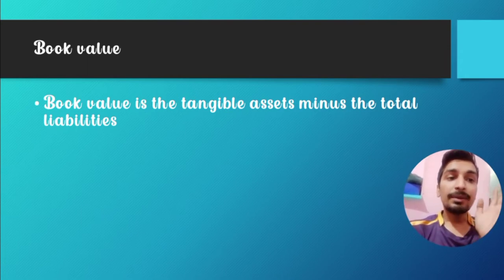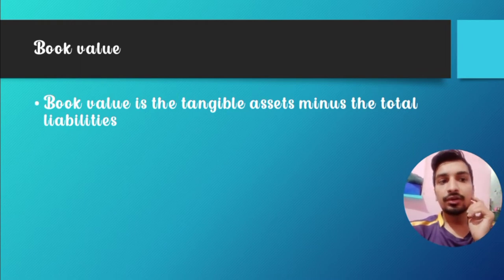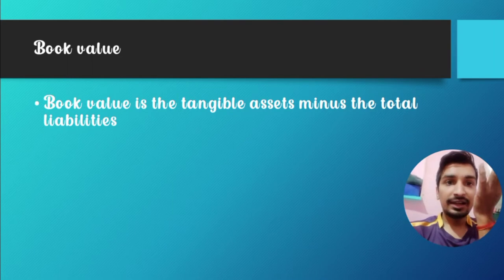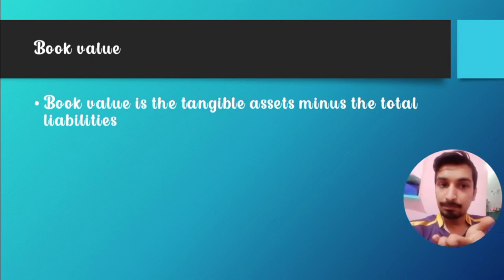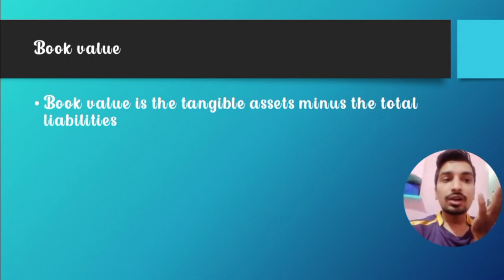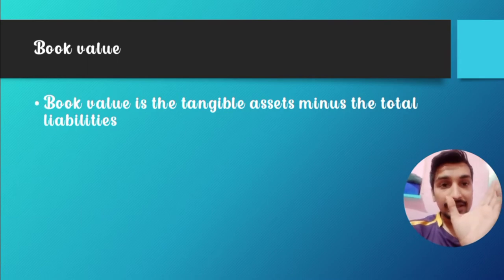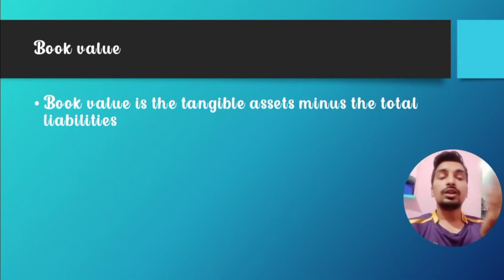Most products we buy — like computers or electronics — are liabilities because their value keeps going down with time. Something you buy that results in a loss for you in the future is called a liability.